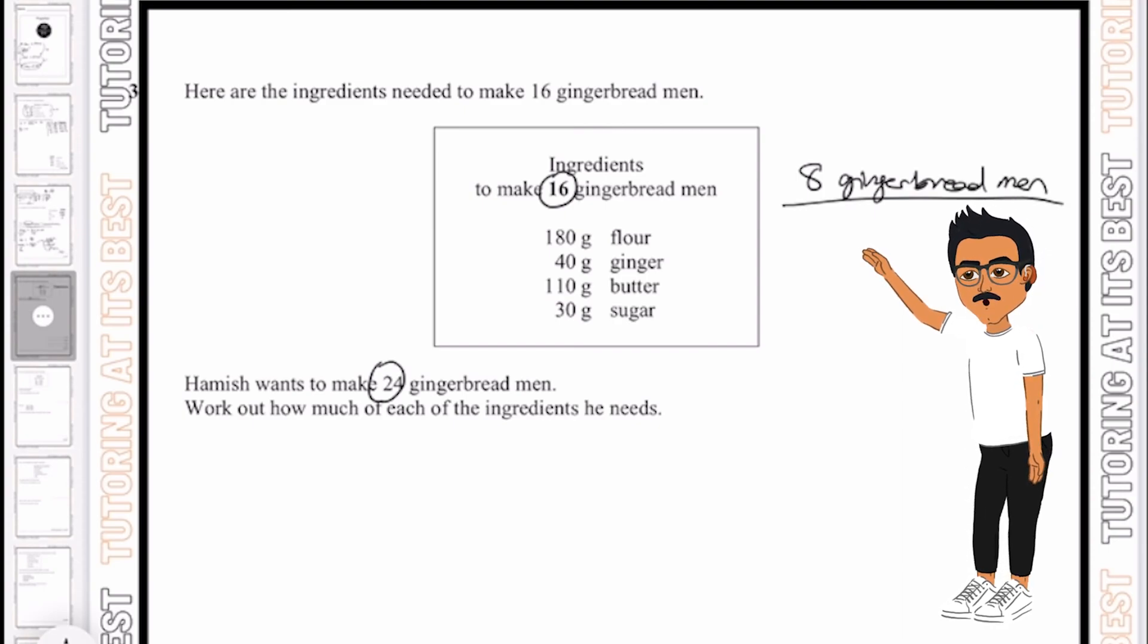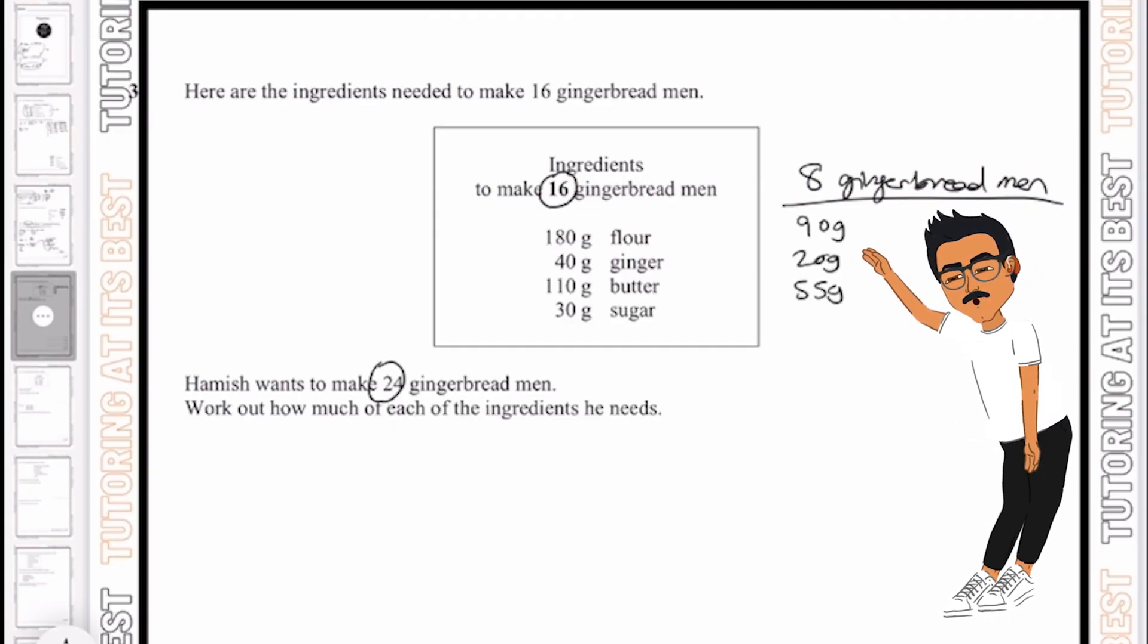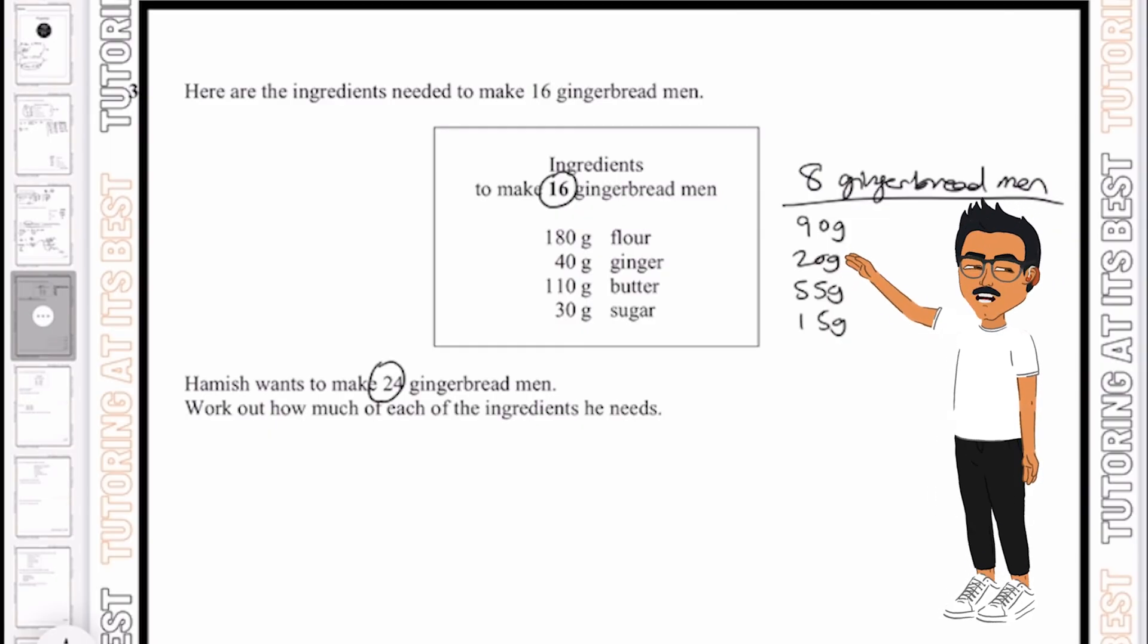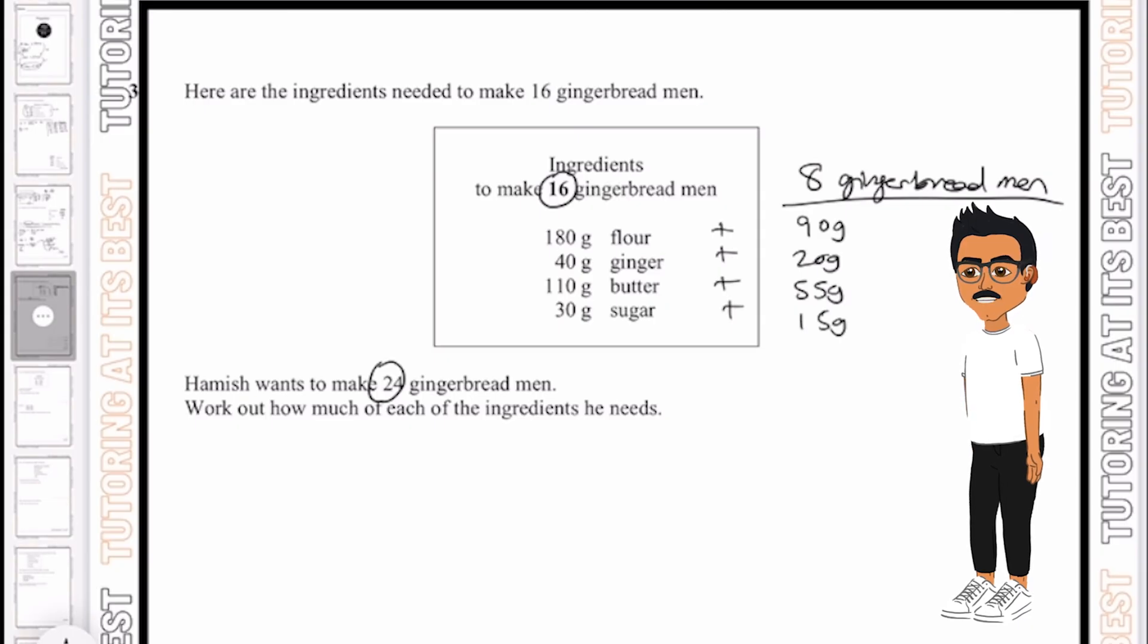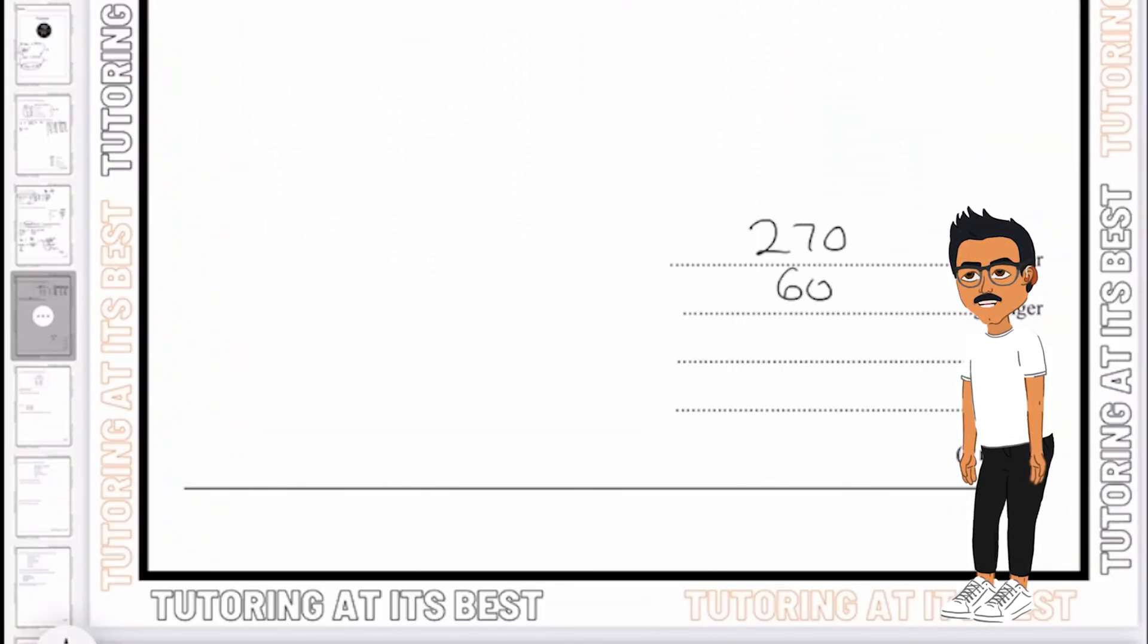So let's halve these out, which gives us 90 grams, 20 grams, 55 grams and 15 grams. And now we can add these on. So add them to each specific one, which would then give us, if I just write this out here, 270 grams, 60 grams, 165 and 45 grams. And there we are, and that's all we would need to do.